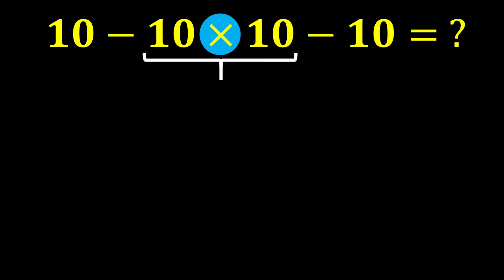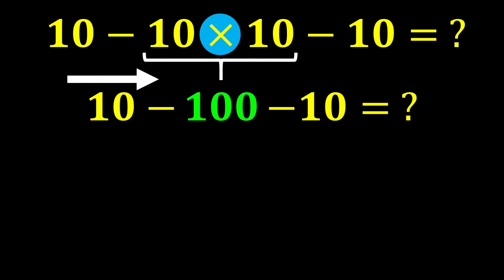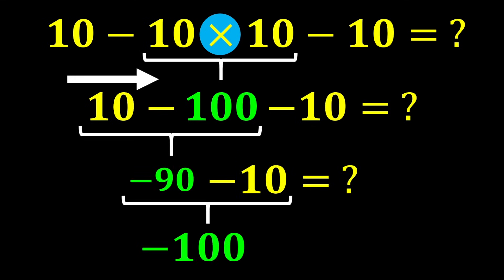10 times 10 gives us 100, and the expression becomes 10 minus 100 minus 10. In this expression, we have two subtractions, and since they have equal priority, we calculate from left to right. 10 minus 100 gives us negative 90, and finally negative 90 minus 10 gives us negative 100, which is our final and correct answer.